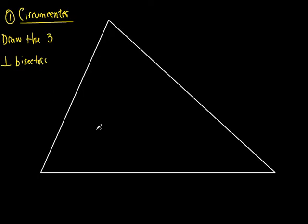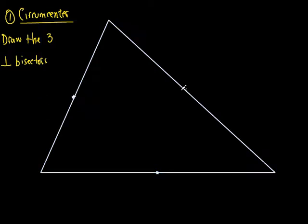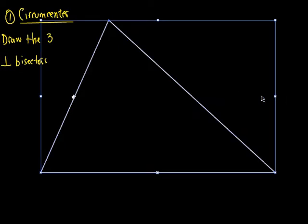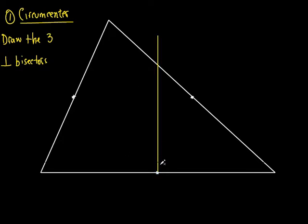What does it mean to be a bisector? It means it hits the side at the midpoint. So I'm going to find the midpoint on each of the three sides and bisect all three of them. But it doesn't just say bisector — it says perpendicular bisector. So I'm going to draw a line from each midpoint that is perpendicular to that side. It could stop at the triangle or go through it — it doesn't really make any difference. That's one perpendicular bisector, and I'm going to draw three of them because I've got three sides.